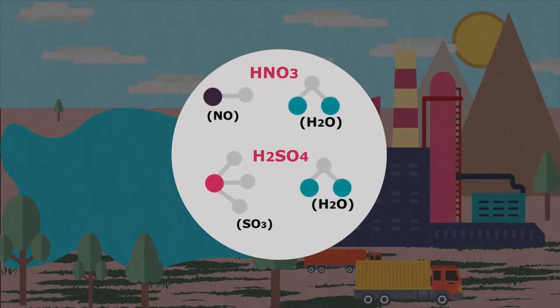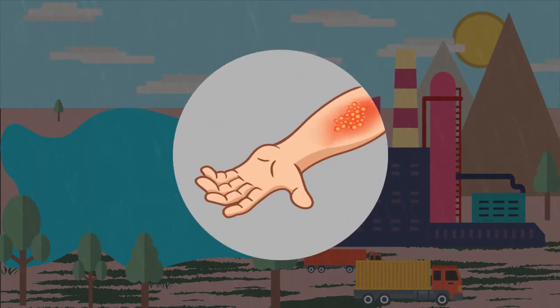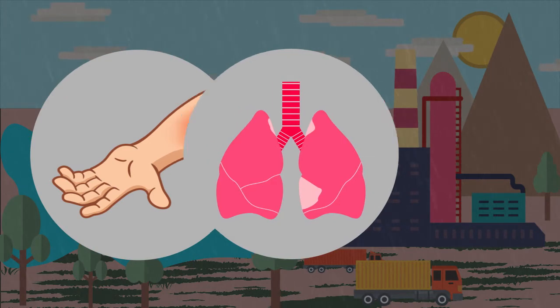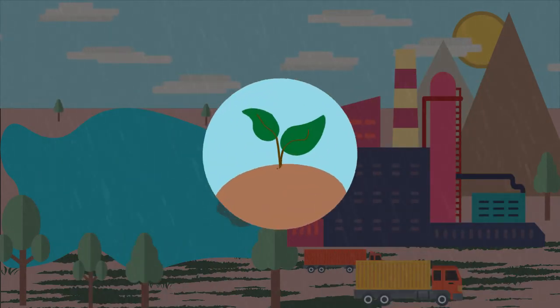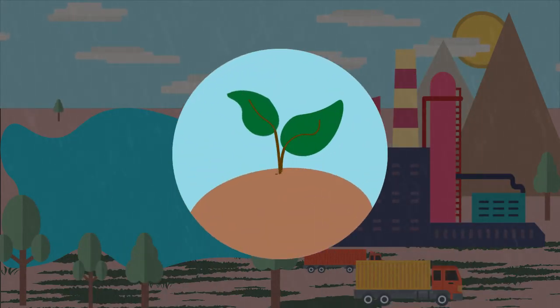Acid rain is very harmful. It causes skin allergy and respiratory problems. It alters pH of soil, which impacts vegetation.